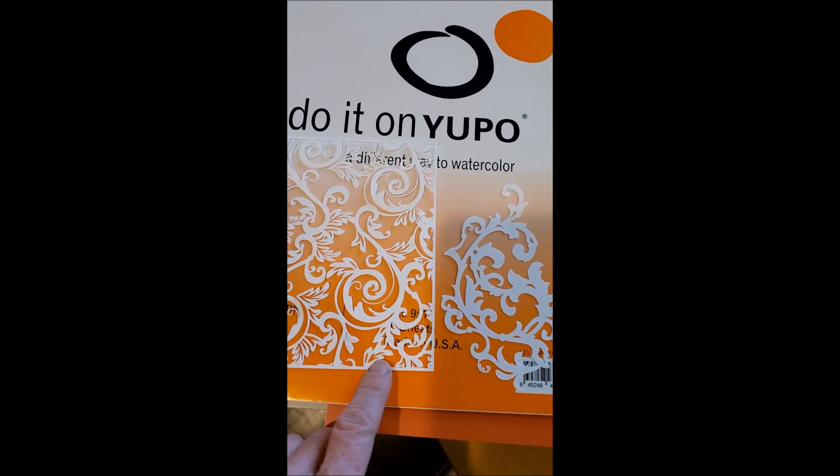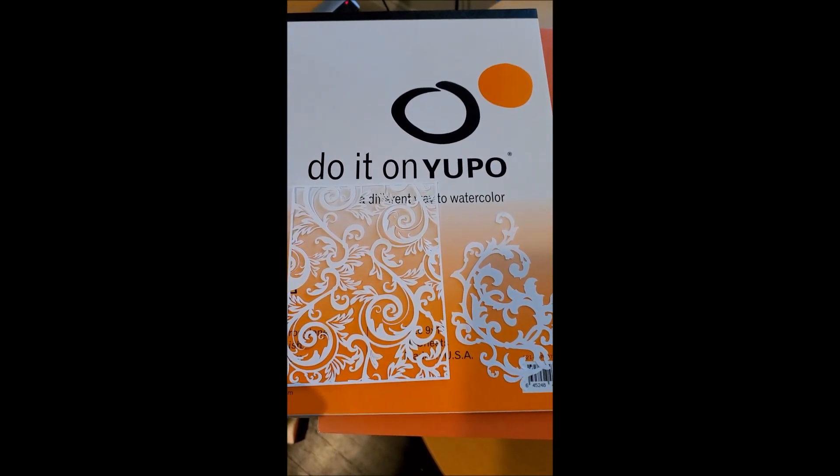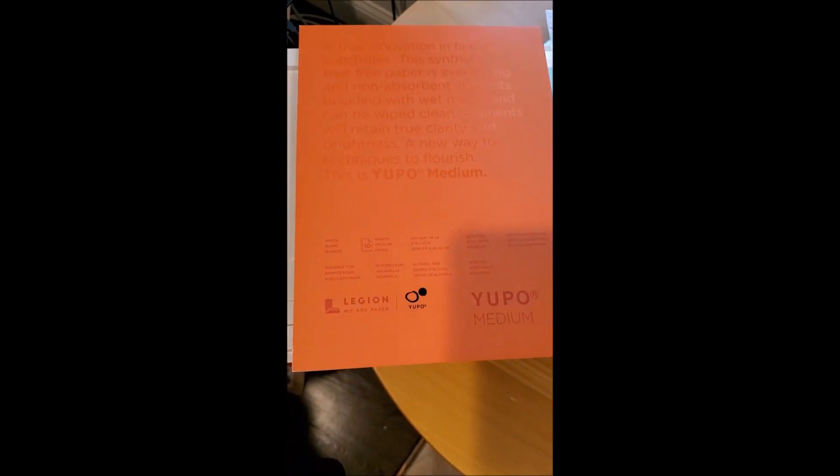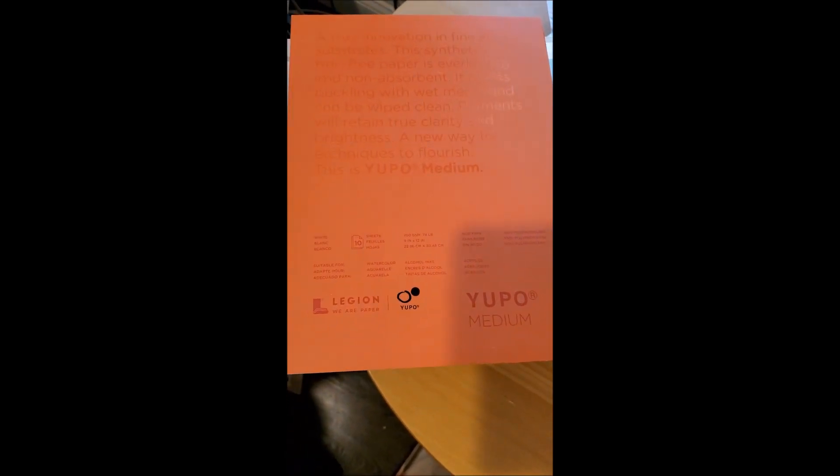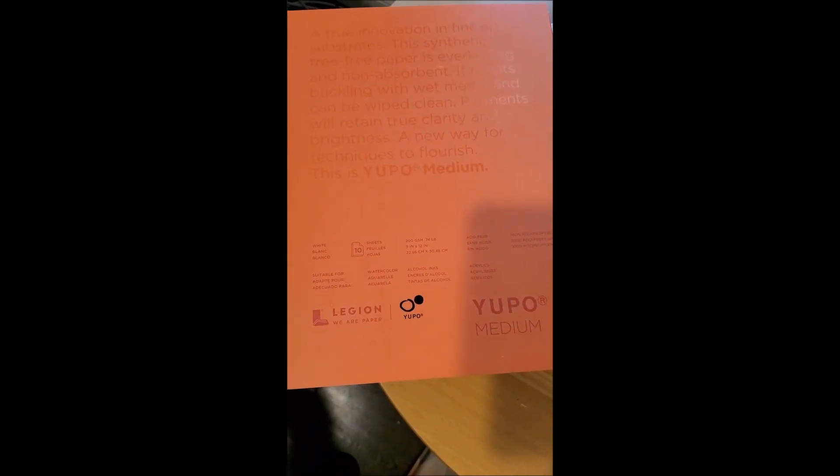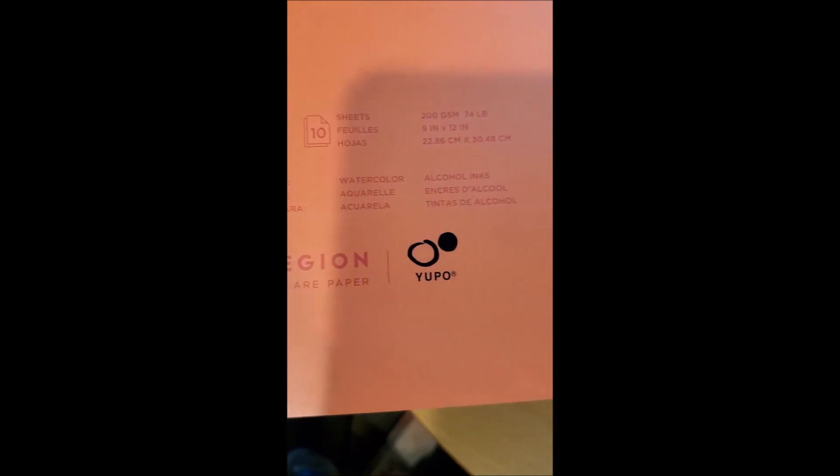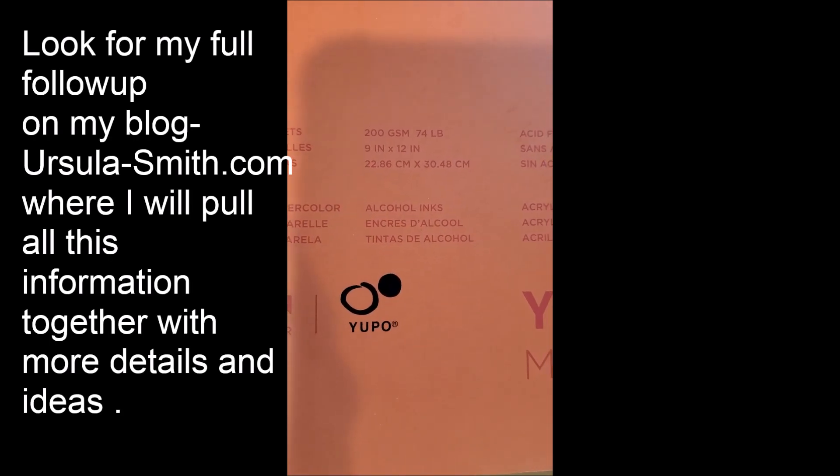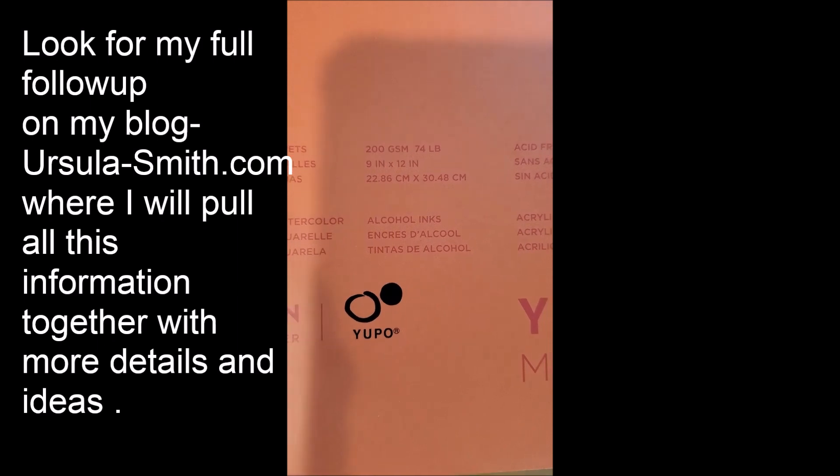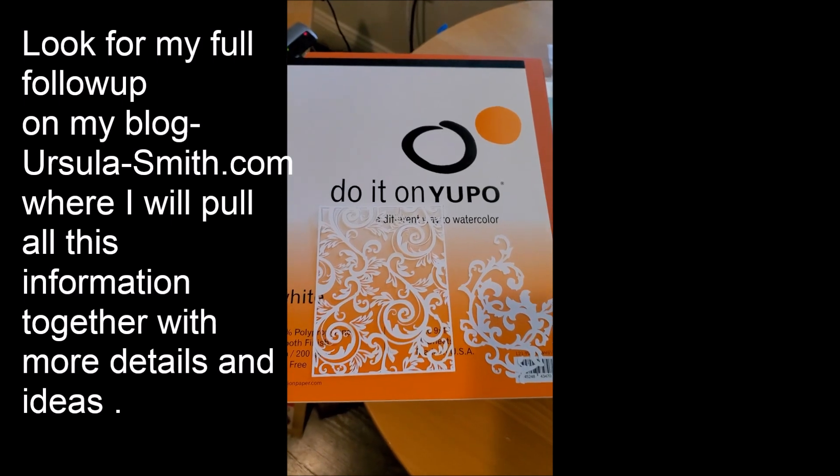I just ordered some more from Amazon rather than Dick Blick where I had ordered it before. It has the same details and measurements. Yeah, 200 GSM, 74 pound. So I'm assuming it's going to work the same as the original Yupo paper that I had.